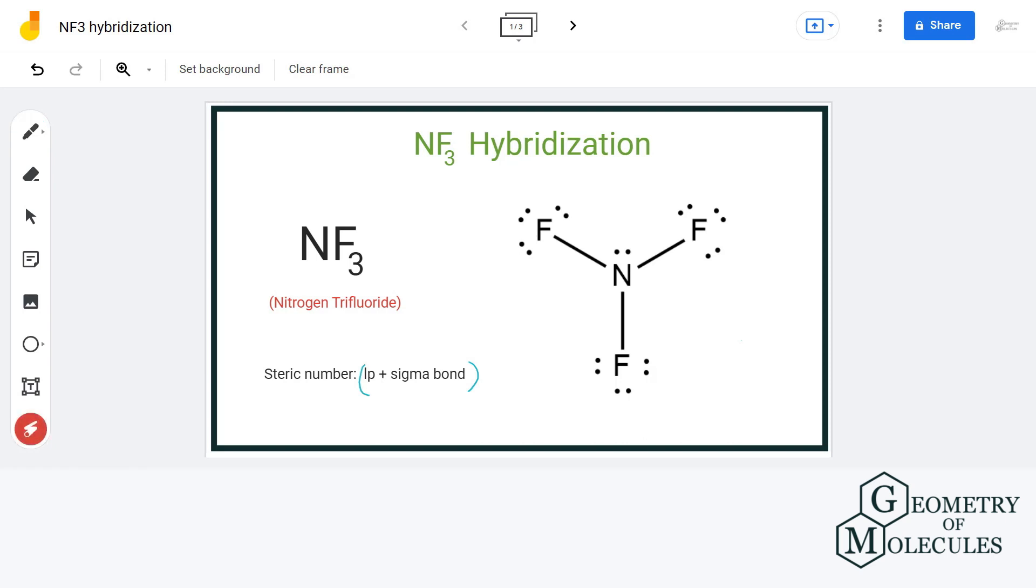So, let us have a look at the Lewis structure of NF3. We can clearly see that central atom nitrogen has formed 3 sigma bonds with 3 fluorine atoms and it also has 1 lone pair of electron.